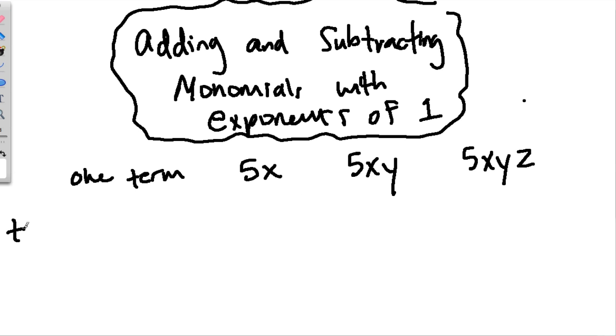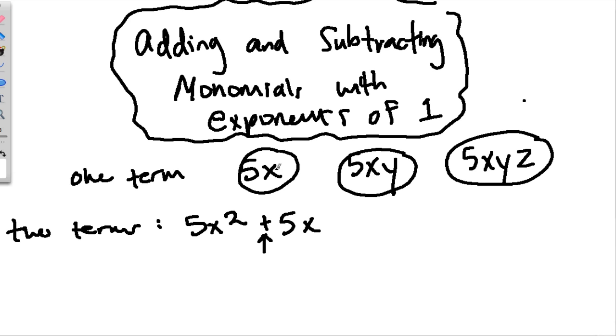What does two terms look like? Two terms would be something like 5x squared plus 5x. Terms are typically separated by plus or minus signs, right here. Notice here, and in this case, and this one, we have one lump of stuff. That's one term.